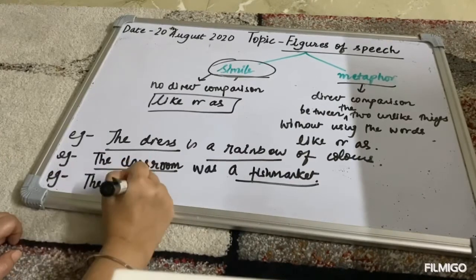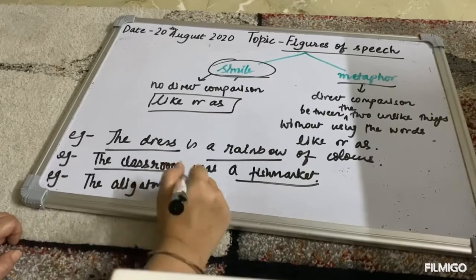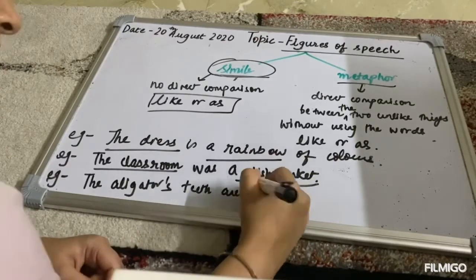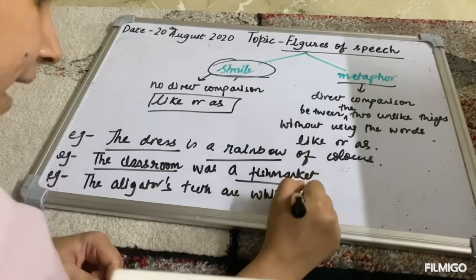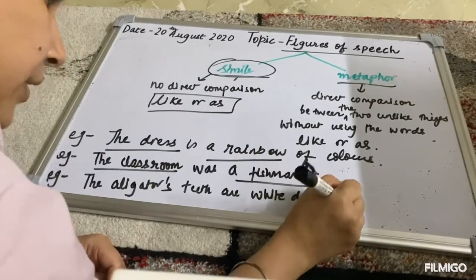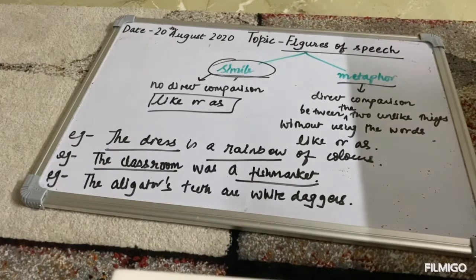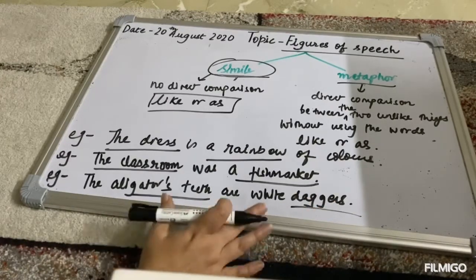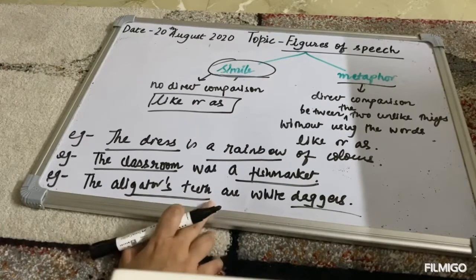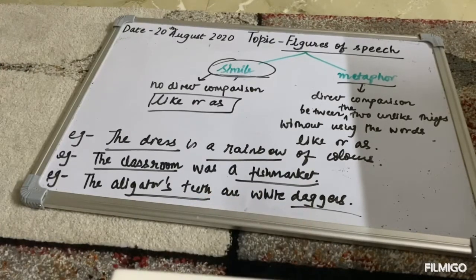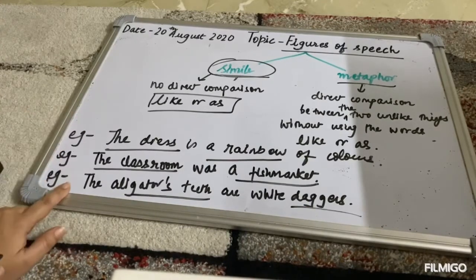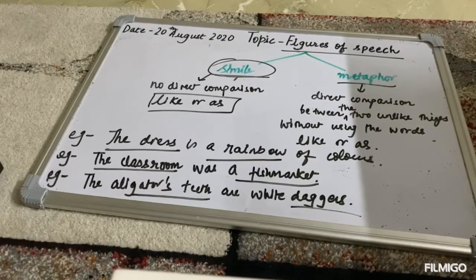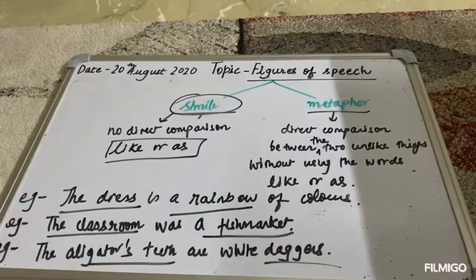The third example could be 'the alligator's teeth are white daggers.' Here again a direct comparison is made between the alligator's teeth and daggers. What I mean to say is that the alligator's teeth are as sharp as white daggers. In all three examples you can see a direct comparison is made between two unlike objects without using the words 'like' or 'as'.